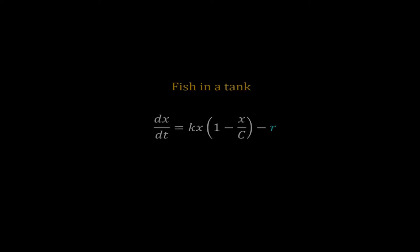Hello everyone. Till now we have discussed the temporal behaviors of dependent variables. In this video we will study how a parameter affects the dynamics of a system. Here is a simplified model for fishes growing in a tank. As the growth is restricted by space and resources, I have used a logistic growth term kx times (1 minus x/c), where c is the carrying capacity. We are removing the fishes at a fixed rate r. Like k and c, r is also a parameter of our model. In this video I will investigate how r affects the steady state of this system.